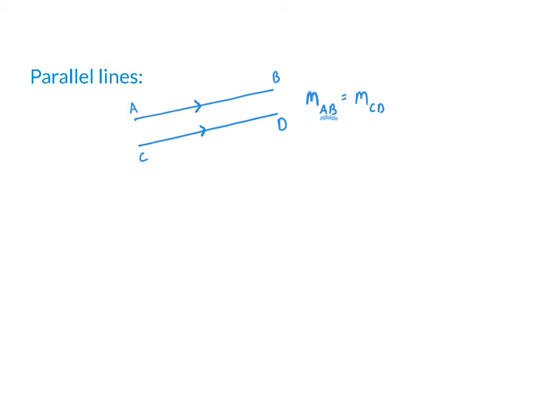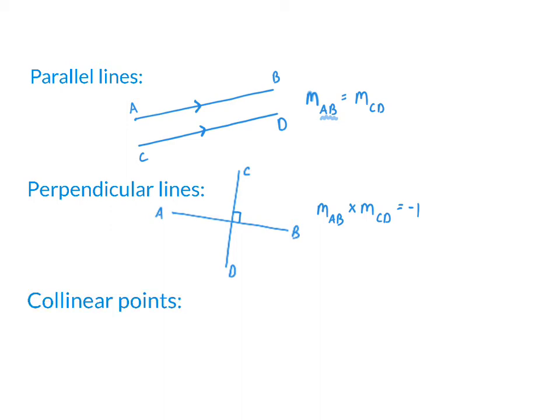The second definition is perpendicular lines. Perpendicular lines form a 90 degree angle on each other, and the product of their gradient will always equal minus 1. The third definition is collinear points, and collinear points are three points that lie on exactly the same line. Here, the respective gradients will always be the same.